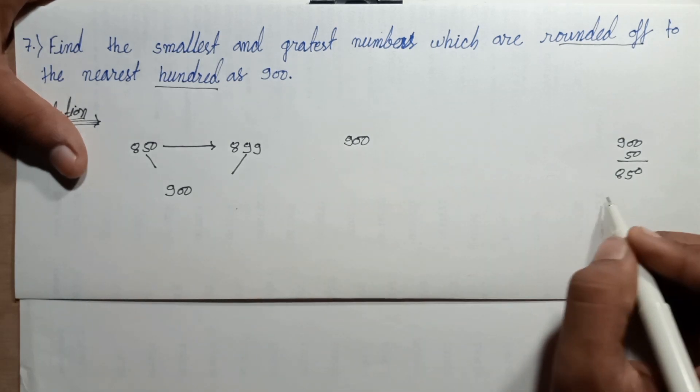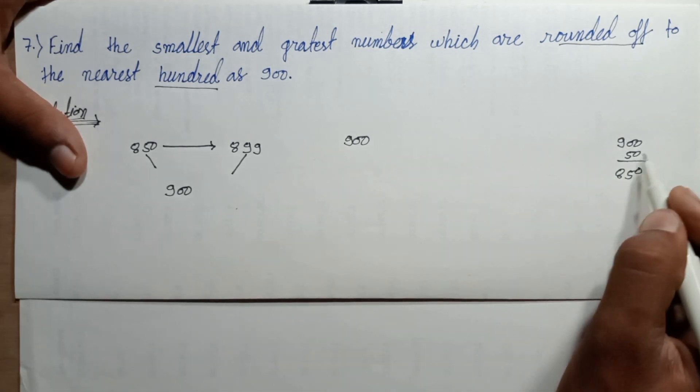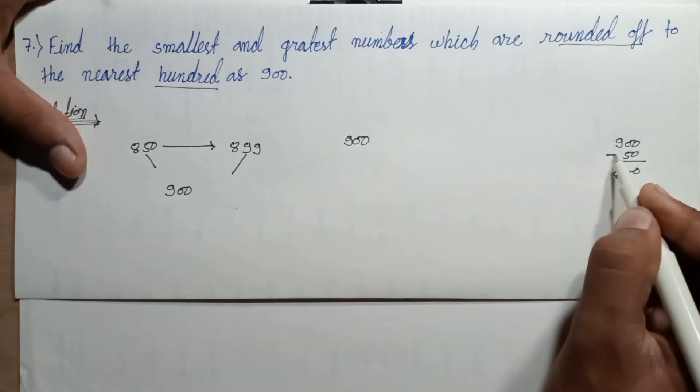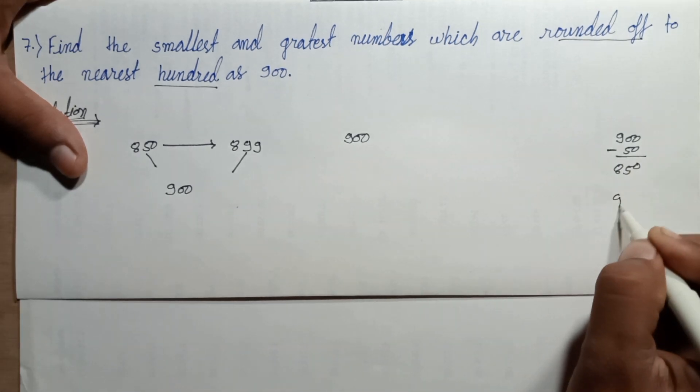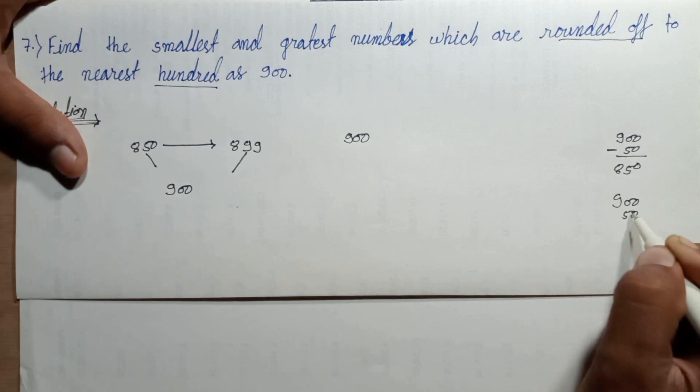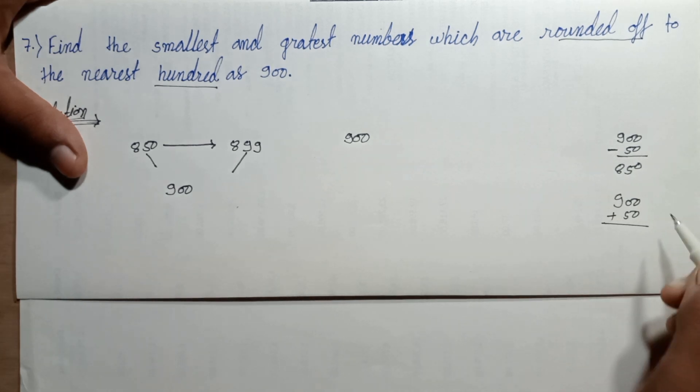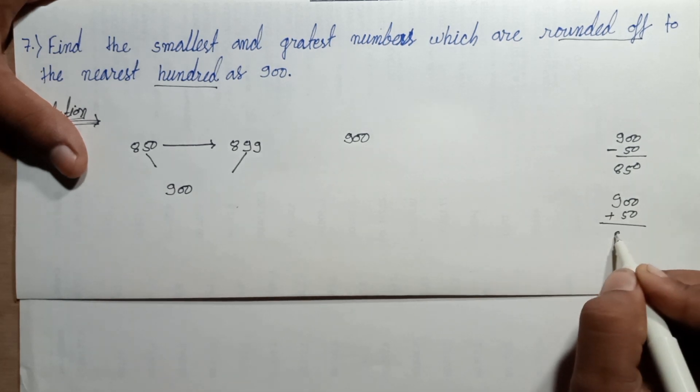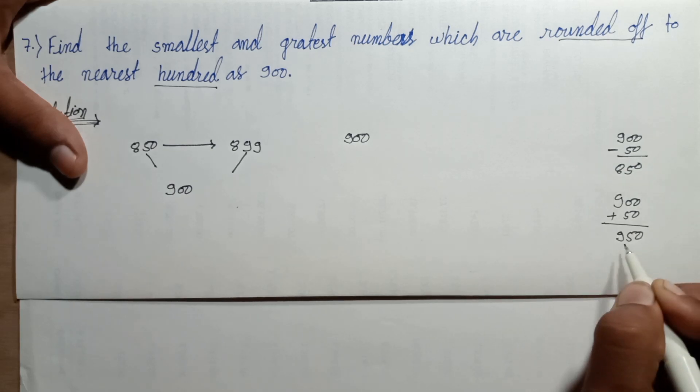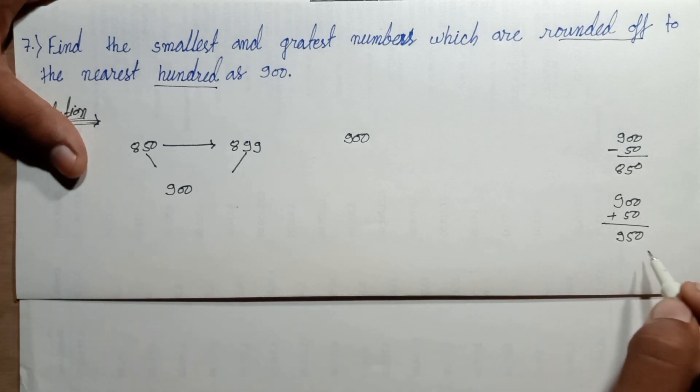Downward subtract downward, ninety, nine hundred fifty upward. Nine hundred fifty rounded of nine hundred fifty.